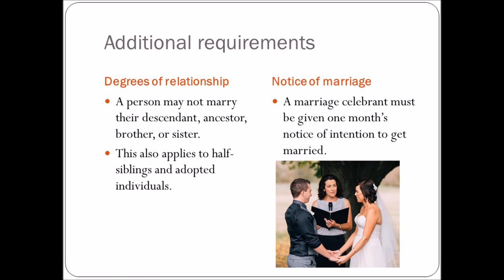Notice of marriage: you've got to give one month's notice. You can't just get married on the fly — you have to give 30 days' notice, otherwise it's not a valid marriage. There was a case where the marriage celebrant was unavailable and they had to get someone else in, which caused some trouble, because you need to prove that the substitute celebrant also had that month's notice.